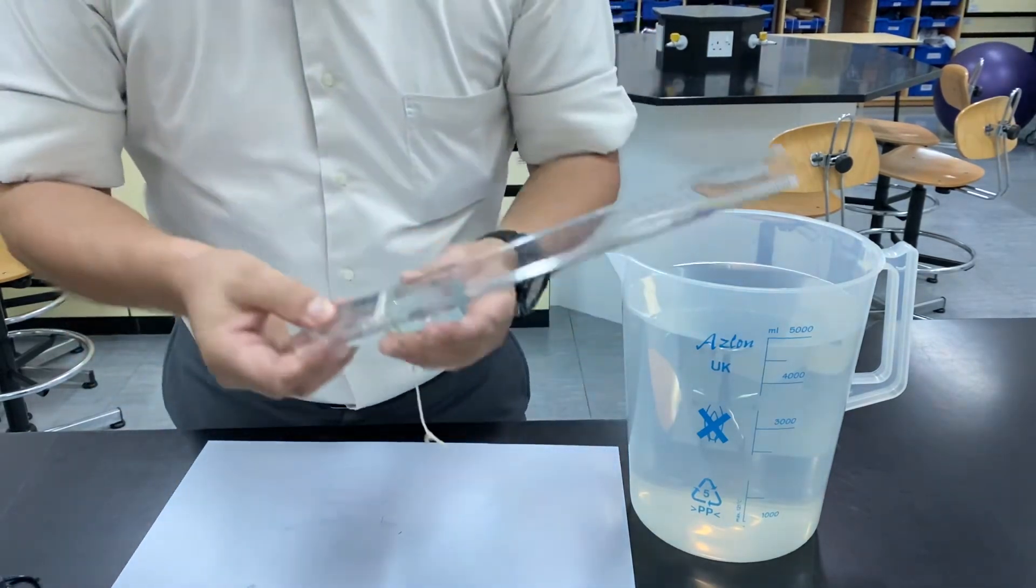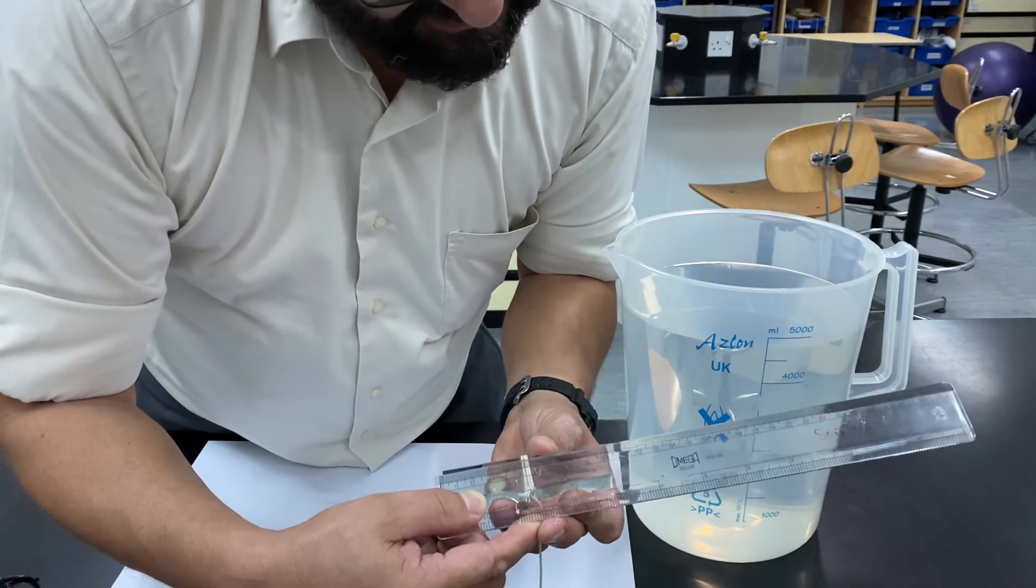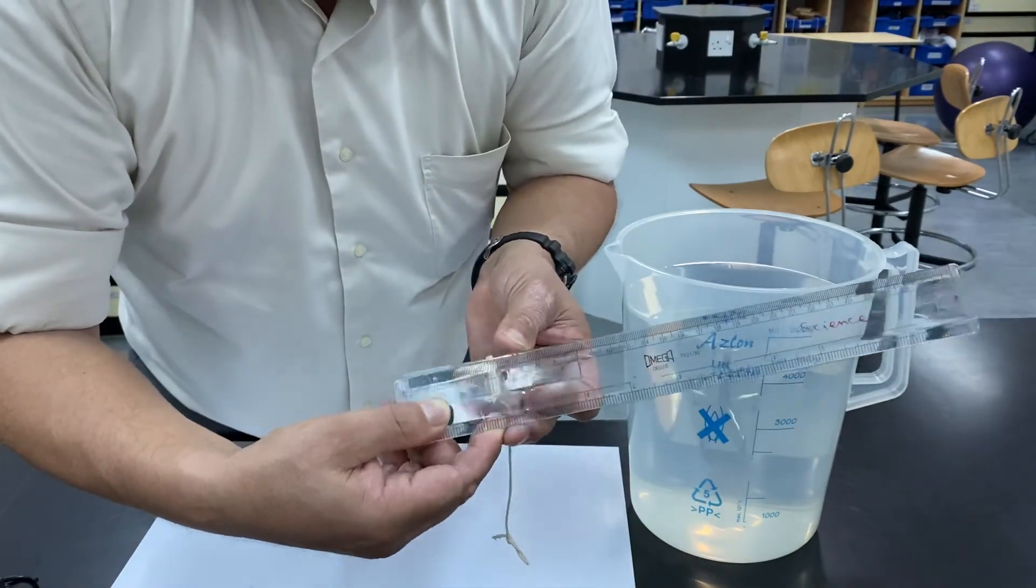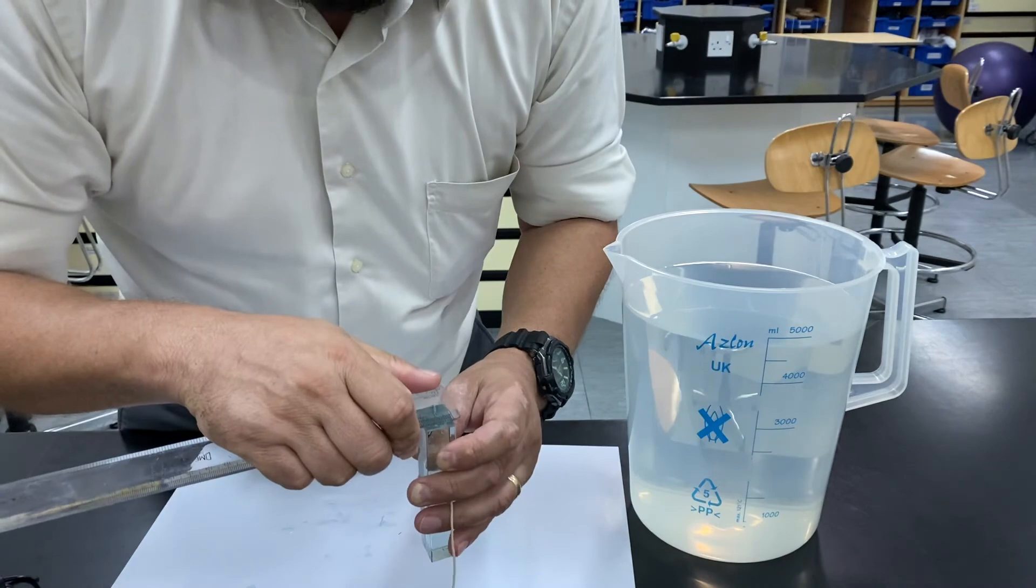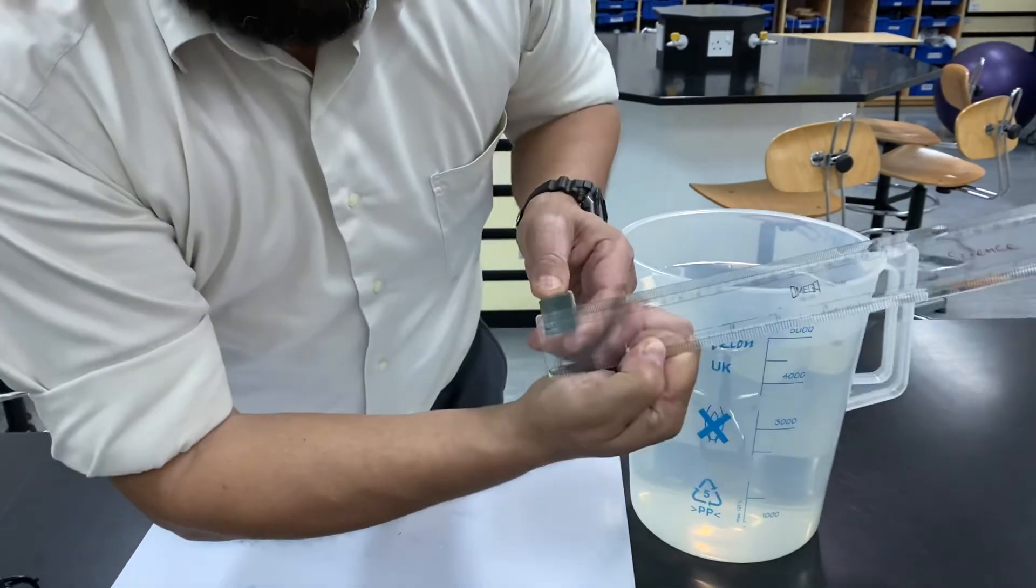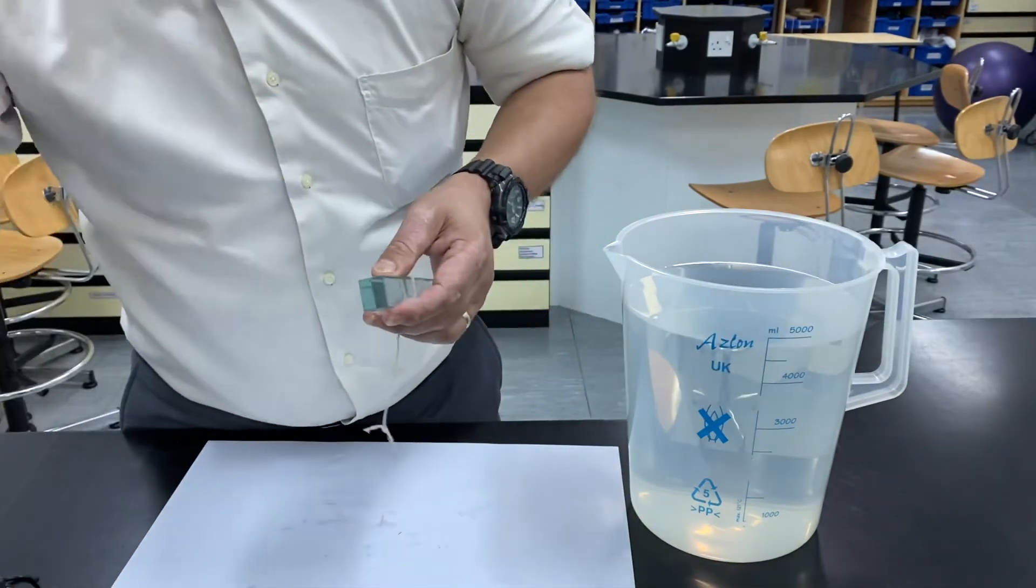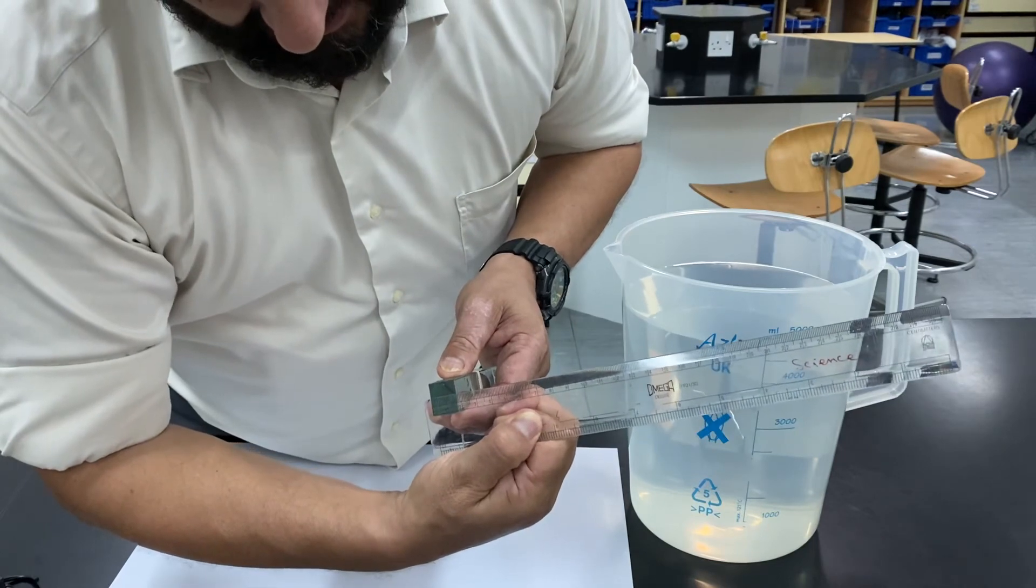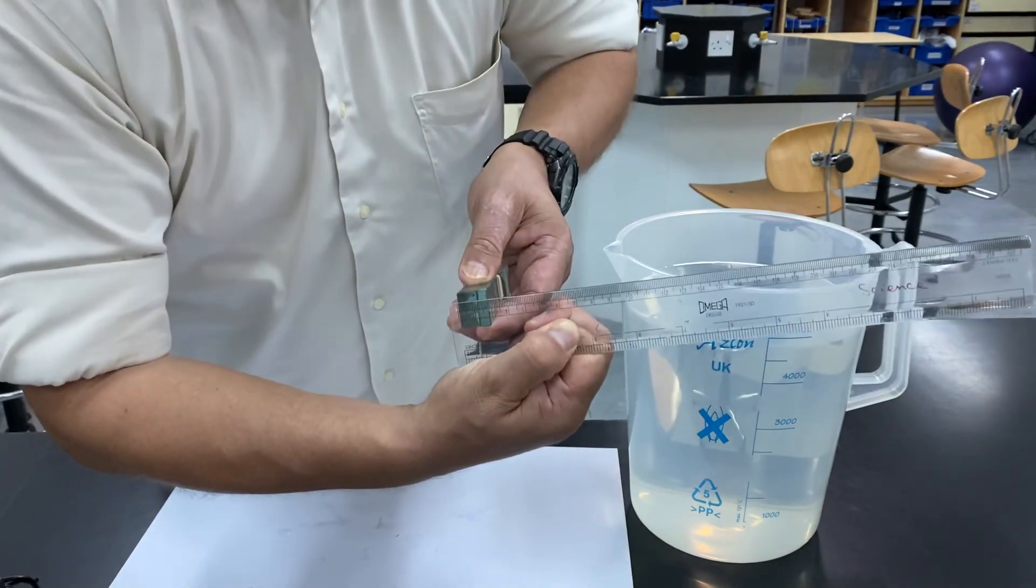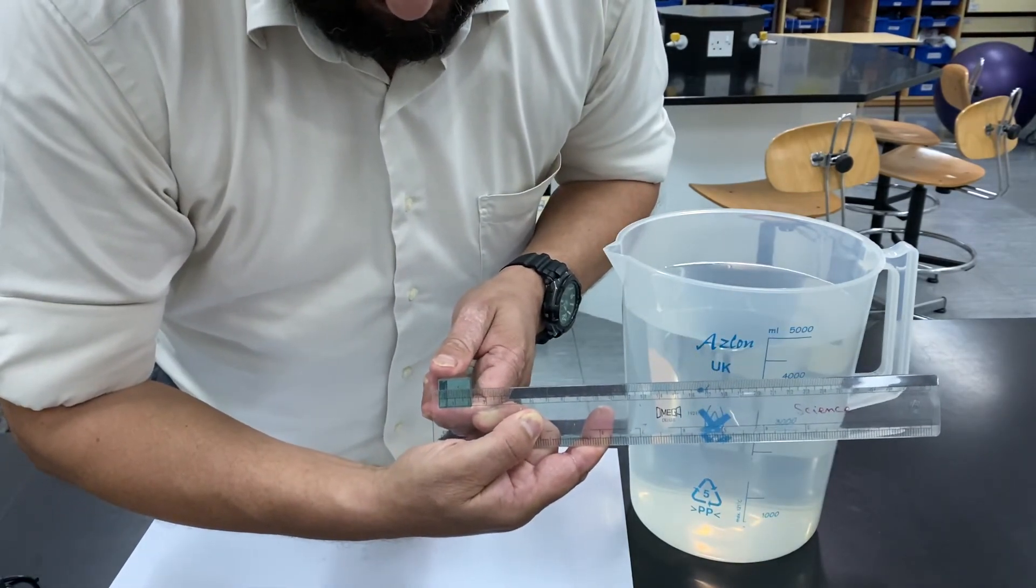Might be a bit tricky for you to see, but let's have a go. This is rectangular. The length is 102 millimeters. Now the height is 19 millimeters. Can you see the height is a bit less than that? 18 millimeters. We're going to go with the height is 18 millimeters, and the width is 20 millimeters.